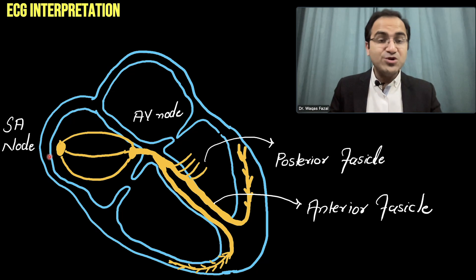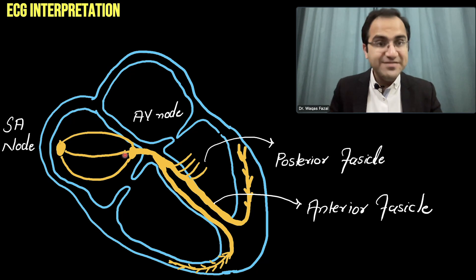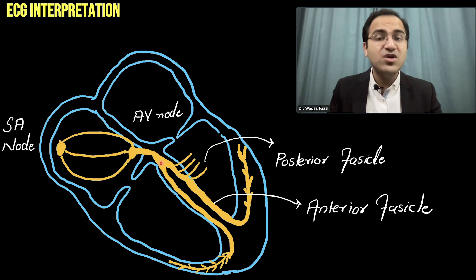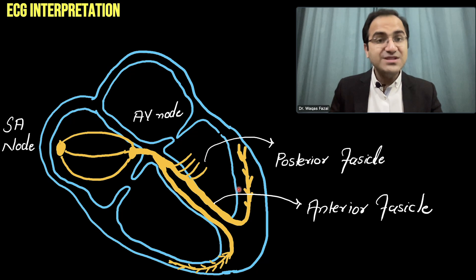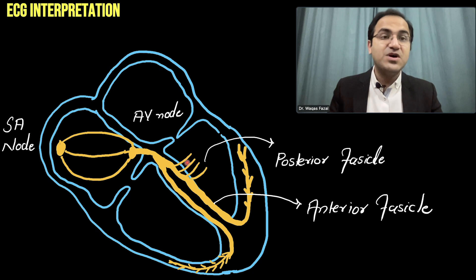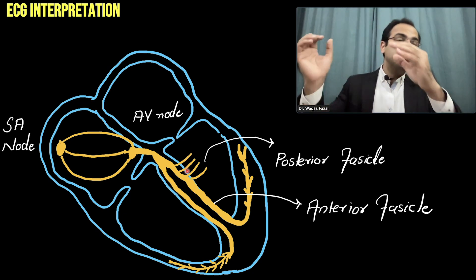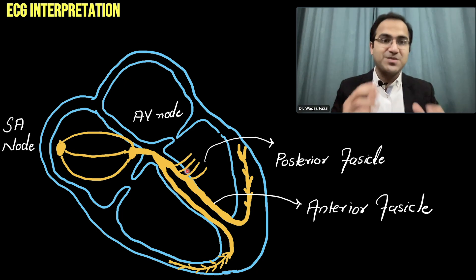Now coming to bundle branch blocks. Remember, the SA node produces electrical currents in the heart, and those electrical currents travel through the internodal pathways to the AV node. From the AV node, these currents pass through the bundle of His, which divides into the right bundle branch and the left bundle branch. The left bundle branch has two further parts: it divides into the posterior fascicle and the anterior fascicle. Whenever there is any block in either the right or left bundle branch, there is abnormality in the flow of current.